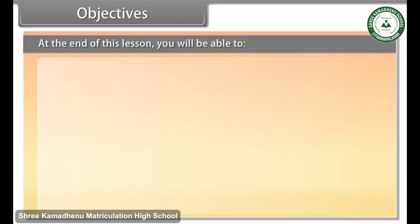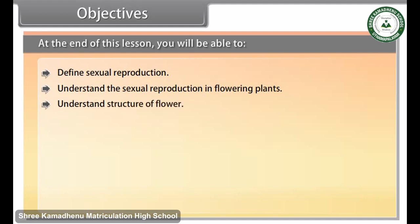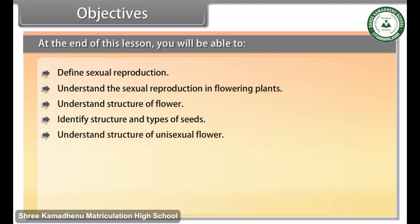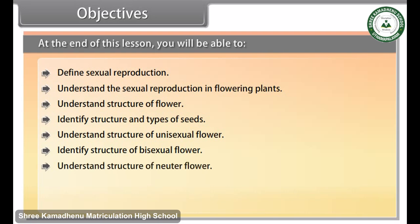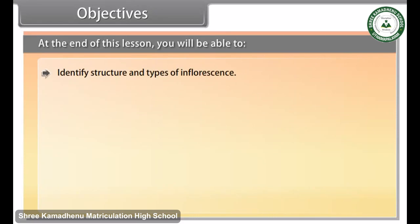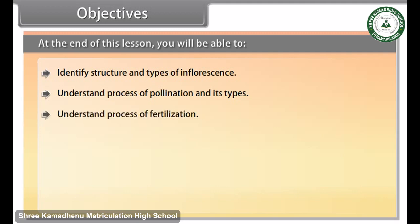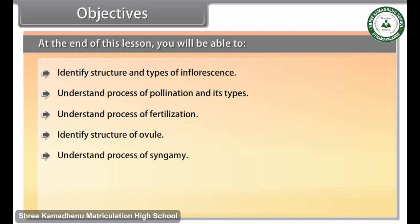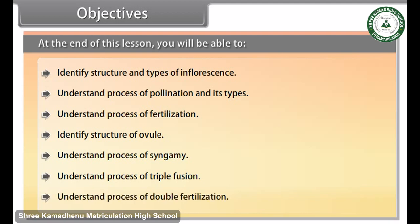At the end of this lesson, you'll be able to define sexual reproduction, understand sexual reproduction in flowering plants, understand the structure of a flower, identify structure and types of seeds, understand the structure of unisexual, bisexual, and neuter flowers, identify monoecious and dioecious plants, understand functions of a flower, identify structure and types of inflorescence, understand the process of pollination and its types, understand the process of fertilization, identify structure of ovule, understand syngamy, triple fusion, double fertilization, and the significance of sexual mode of reproduction.